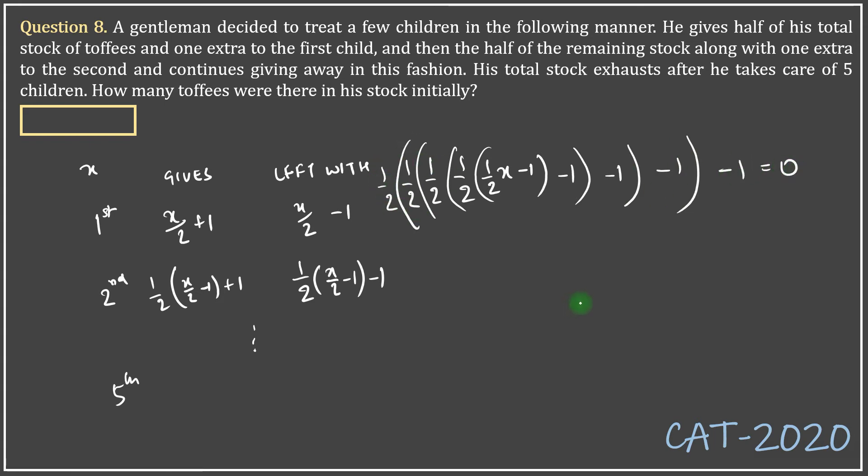This is the equation, but of course none of us is interested in solving the equation like this. We can note that at every step, if he starts with x chocolates, then he is left with x/2 minus 1, and we know that in the last step he was left with 0.